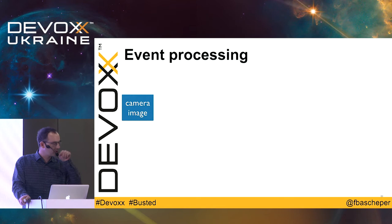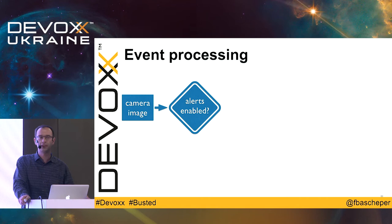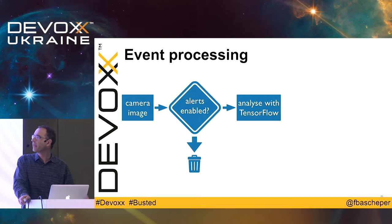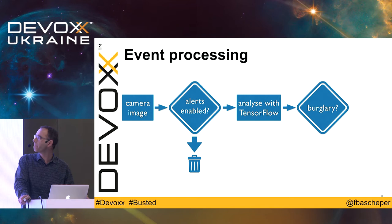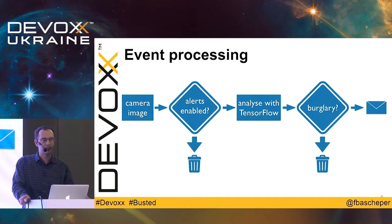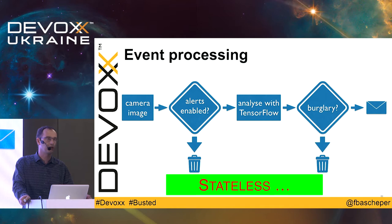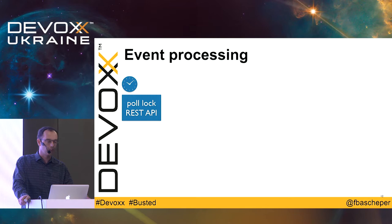How would you process this? When camera images come in, I first check if alerts are enabled. If they're not, I discard them. If alerts are enabled, I analyze the image with TensorFlow. If it detects a potential burglary, I receive a message; otherwise, I discard the message. That sounds pretty simple — this is essentially a stateless way of processing the images, nothing special really.